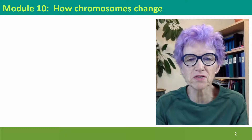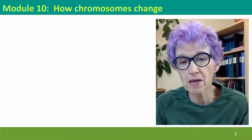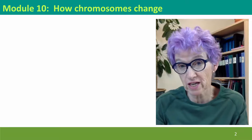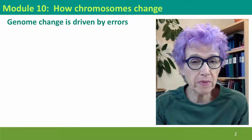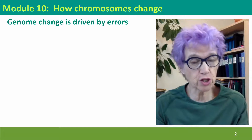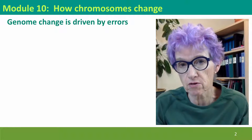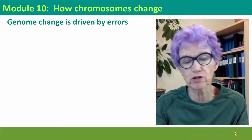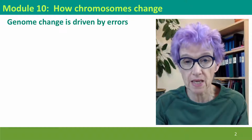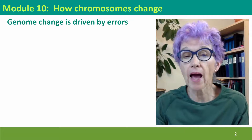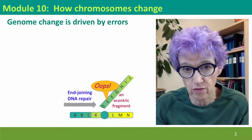Hi, everyone. Welcome to Module 10 of Useful Genetics, where we're going to be thinking about how chromosomes change. Fundamentally, chromosomes change, genomes change, and it's driven by errors. Natural selection selects for doing things right, for faithful replication, but errors creep in and create all kinds of problems.